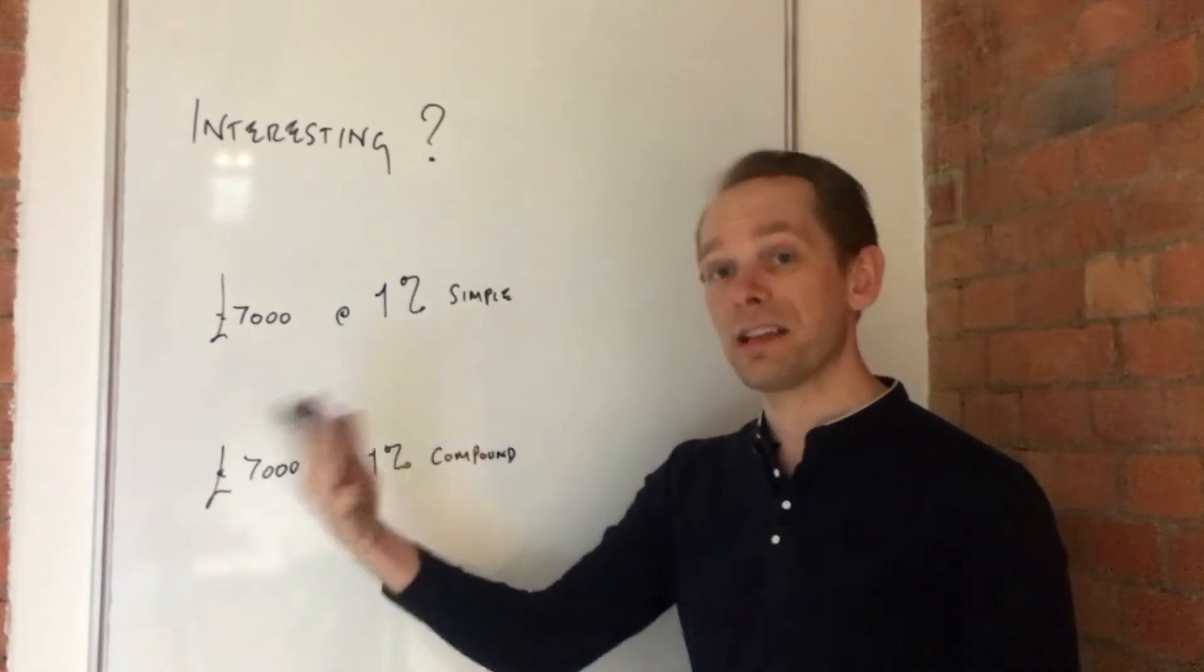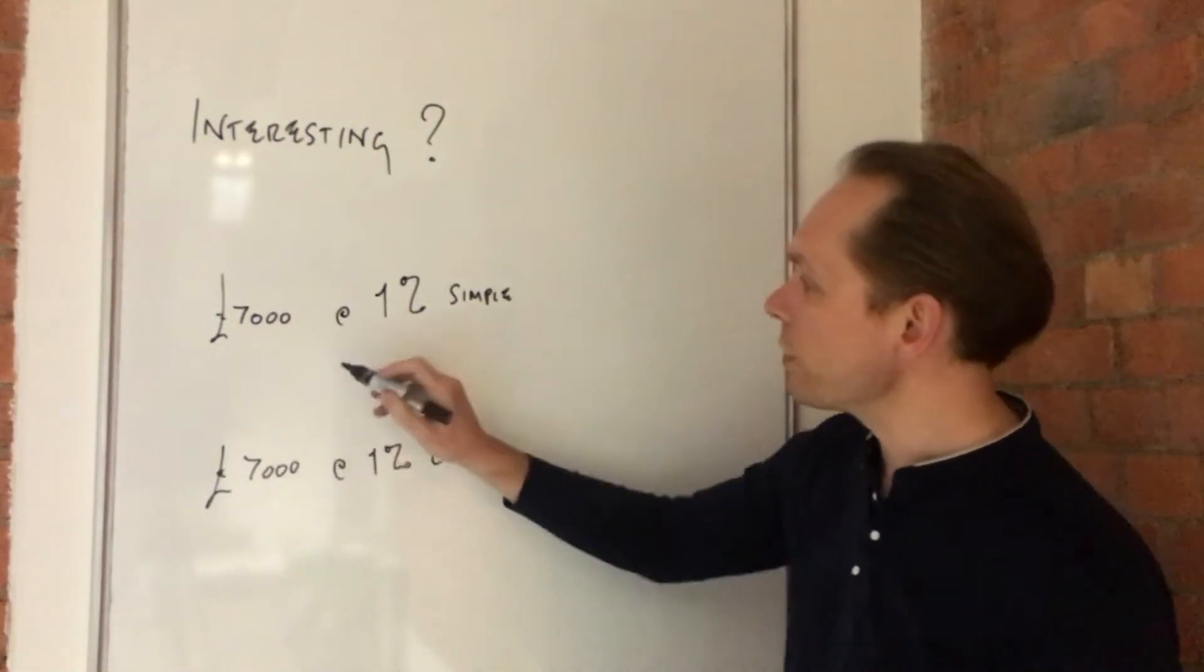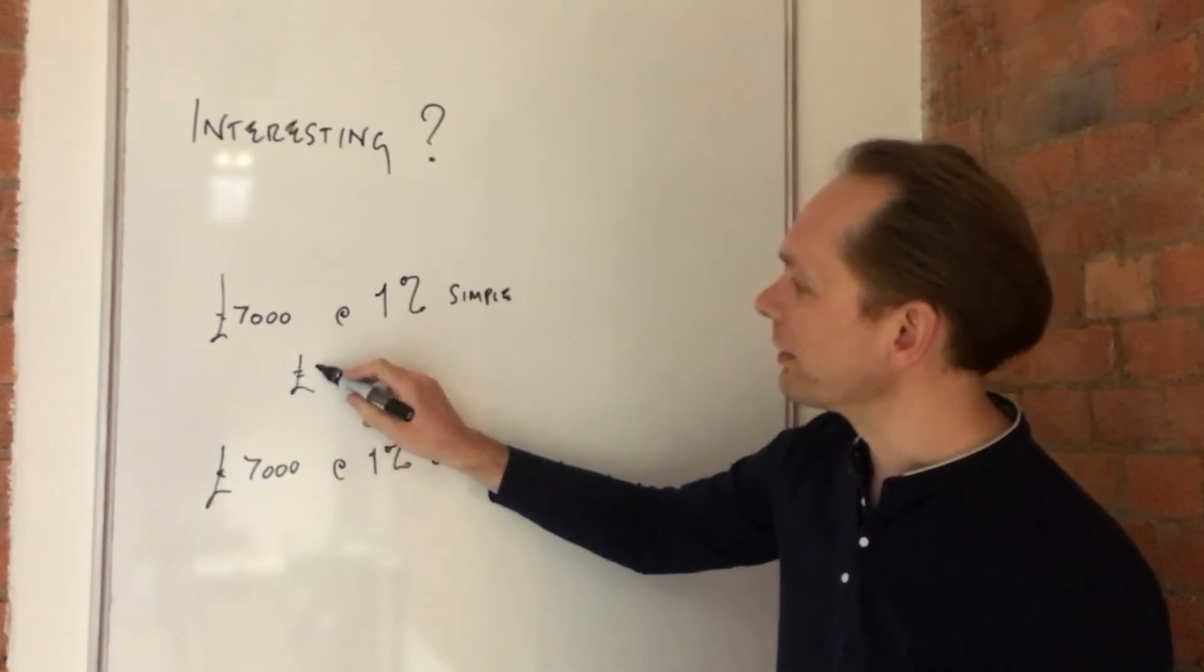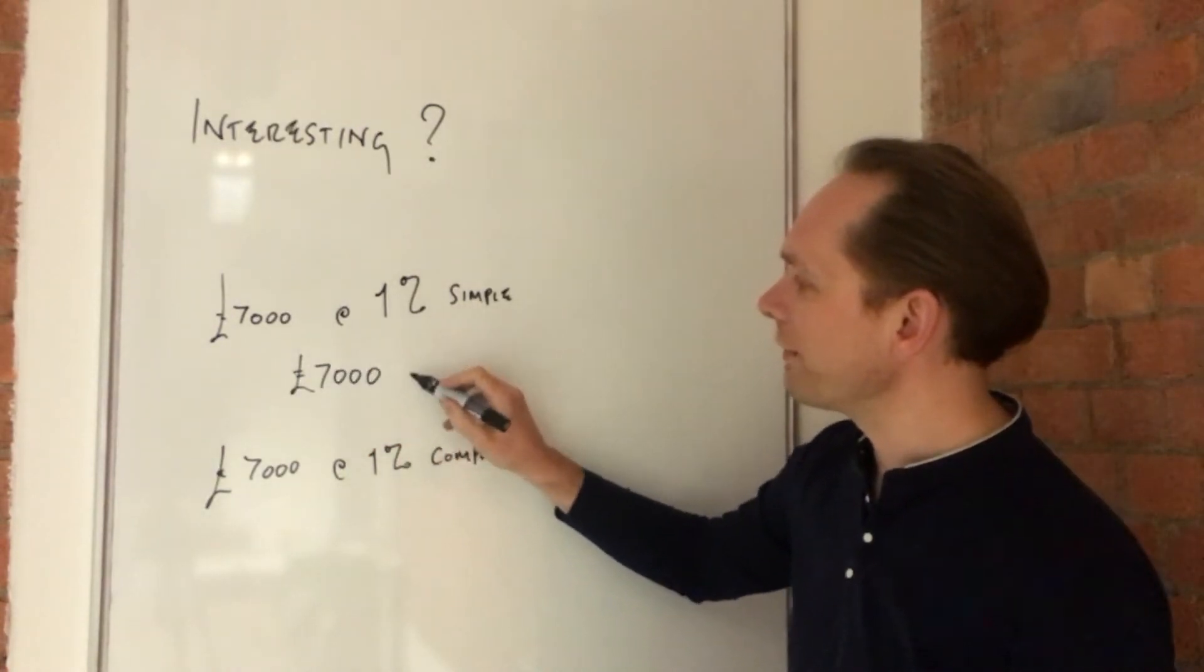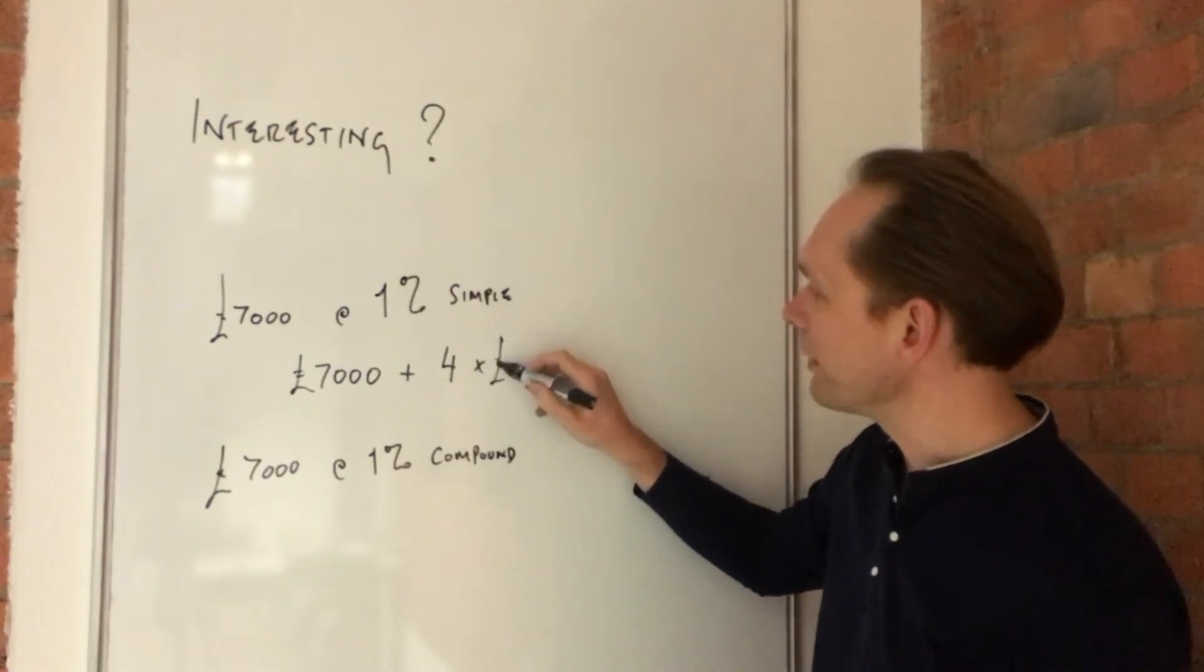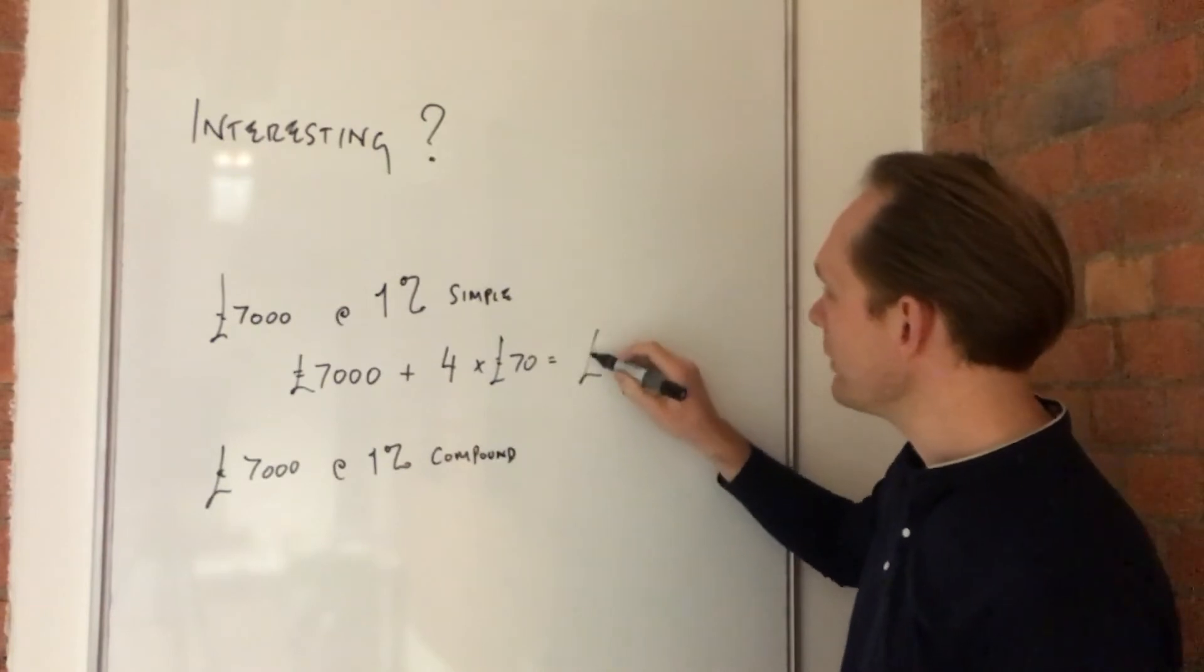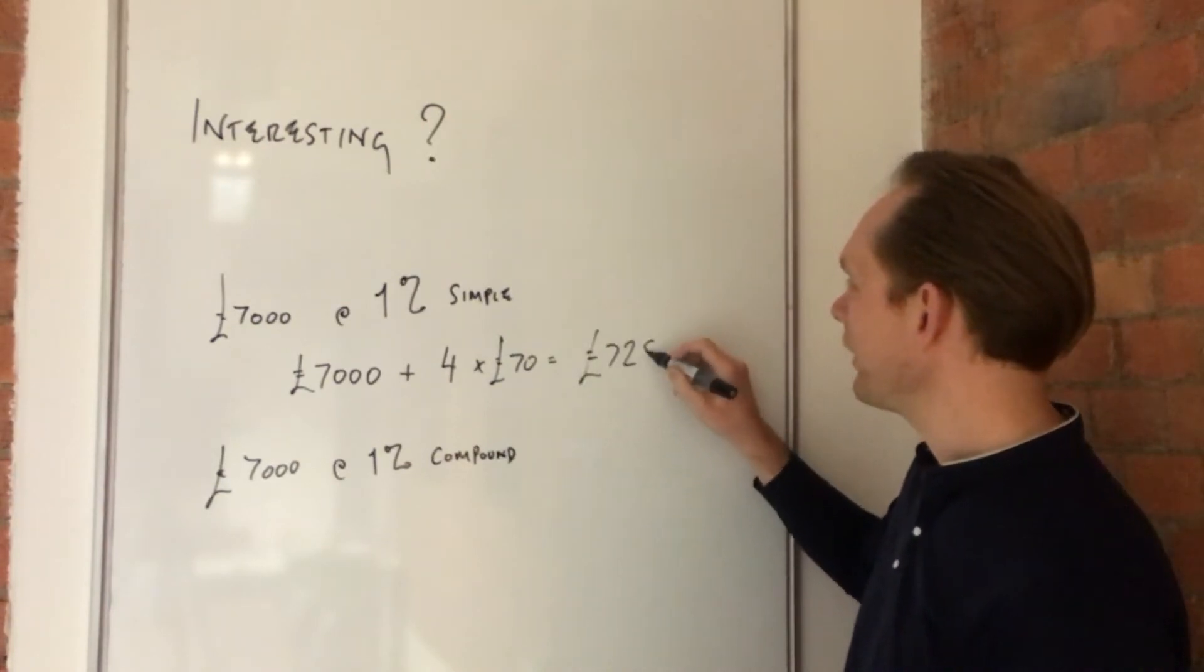After the second year they add another £70, every time £70, so it's £7,140. And after four years the amount that the saver has is the original £7,000 plus four years of £70, which is £280. So she's earned £280 interest and her total is £7,280.